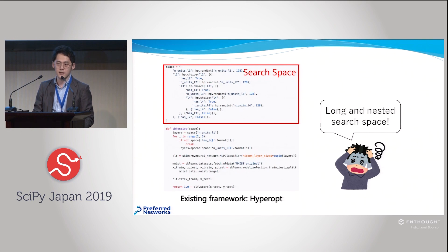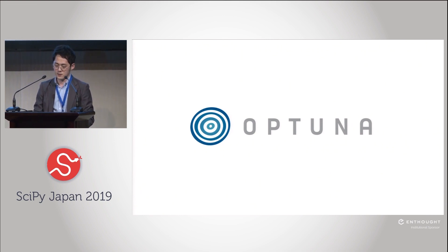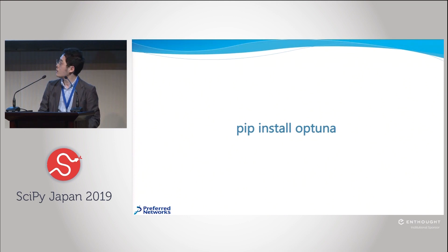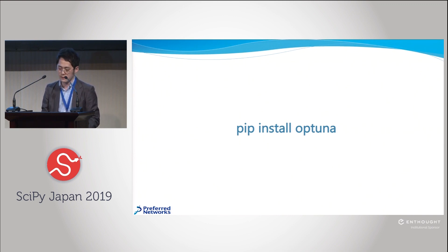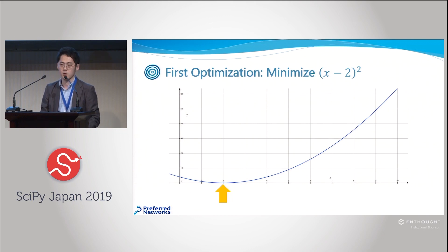That's the reason to use OpTuna. Starting from the basic usage: you can install the library with pip install optuna. There are very few dependencies, so you can immediately install it. You can use OpTuna with any kind of machine learning library, including TensorFlow or scikit-learn, and it is applicable for any kind of black box optimization.